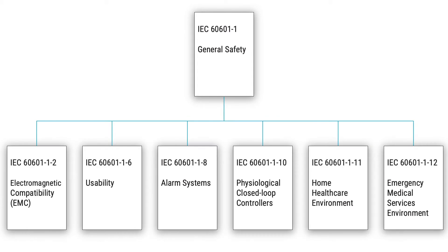The general standard relevant for safety for electrical medical devices is IEC 60601-1. This standard specifies general requirements for basic safety and essential performance. The general standard is an umbrella standard based on collateral standards and particular standards. The collateral standards specify general requirements applicable to subgroups of devices as well as specific characteristics of devices not covered by the general standard. The topics of the collateral standards include electromagnetic compatibility, usability, alarms, closed-loop controllers, home healthcare and EMS. In principle, each of these collateral standards apply in parallel with the general standard.